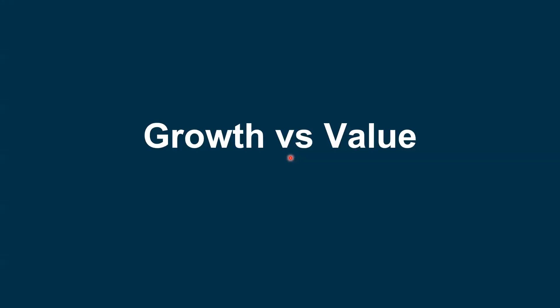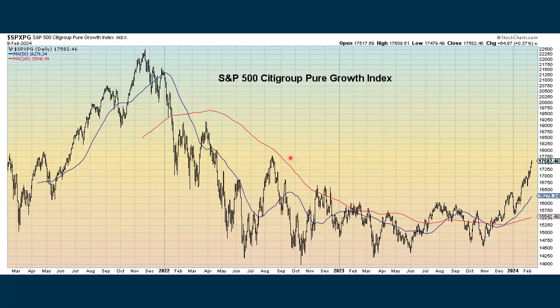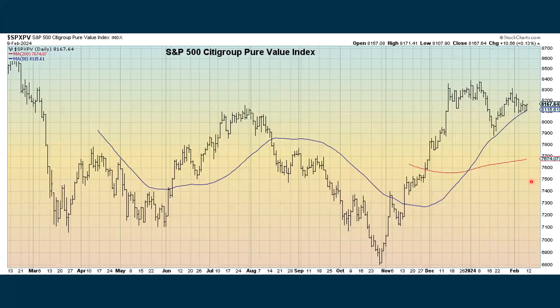Another area we look at is growth versus value. When growth is doing well, indexes tend to do well. When indexes are under pressure, value tends to outperform. Looking at a growth index by itself, we are in an uptrend and showing some improvement. Looking at value by itself, it's also in an uptrend — it hasn't been breaking out as much, but it's hanging in there.